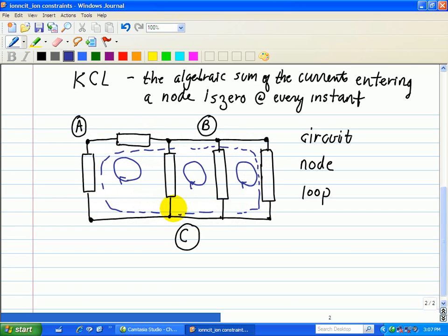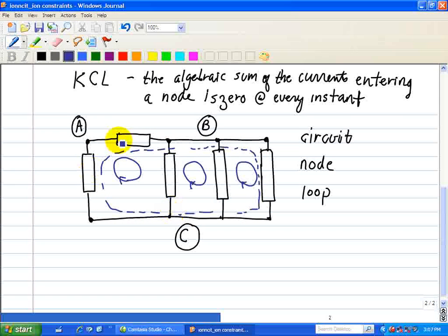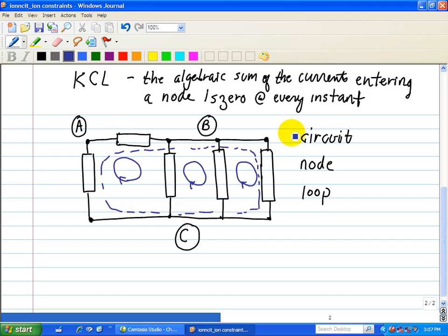This circuit diagram showing five generic devices illustrates the concepts of a circuit, nodes, and loops.